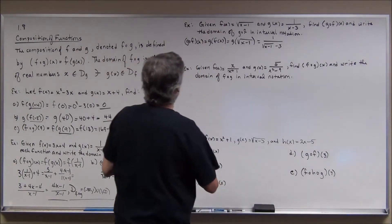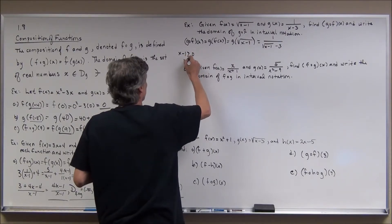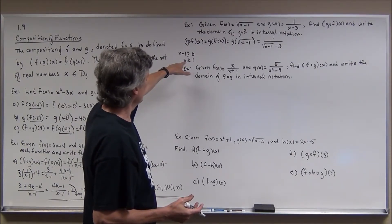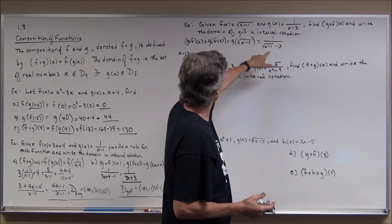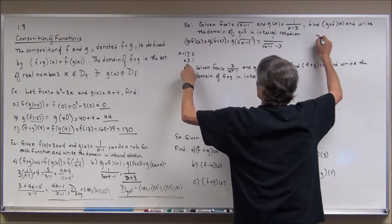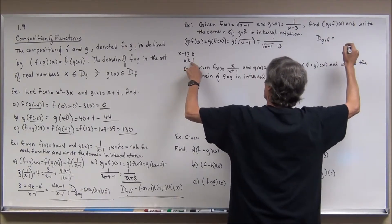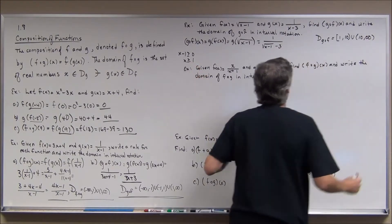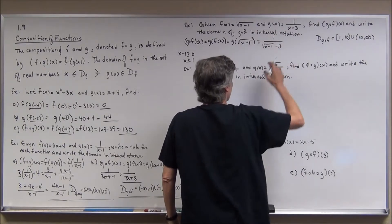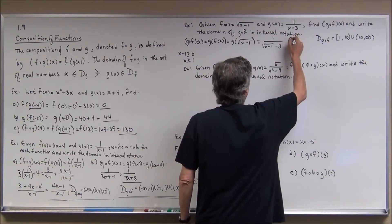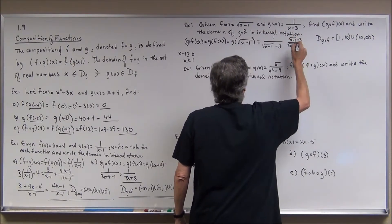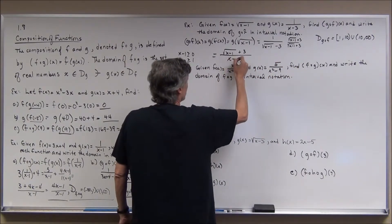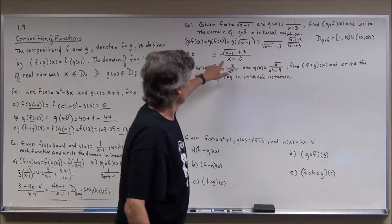Since f of x is a radical, x minus 1 must be greater than or equal to 0, so x must be greater than or equal to 1 — but it can't be 10. The domain of g circle f is from 1 (inclusive) to 10, and from 10 to infinity. I could also rationalize the denominator by multiplying by the conjugate, the square root of x minus 1 plus 3, giving the square root of x minus 1 plus 3 over x minus 10 — which makes it even clearer why 10 is excluded.